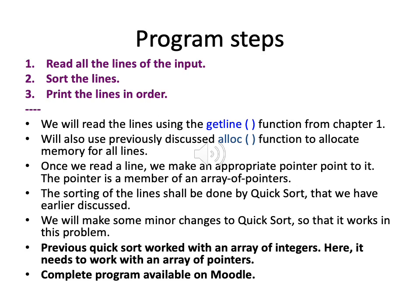A number of the functions we are going to use have already been coded before, so we will just be reusing them. We will read the lines using the getline function from chapter one. Once you read a line you have to store it somewhere, so we need to reserve memory — for that we will use the previously discussed alloc function, which will allocate memory for all the lines.